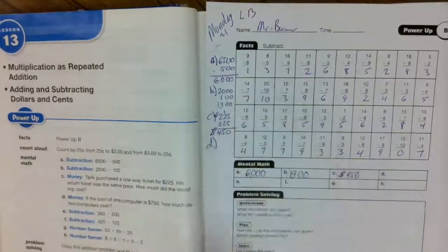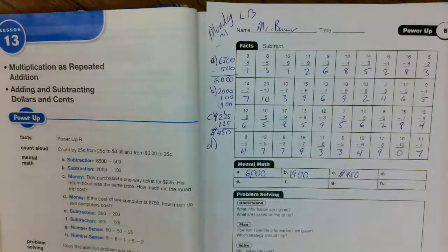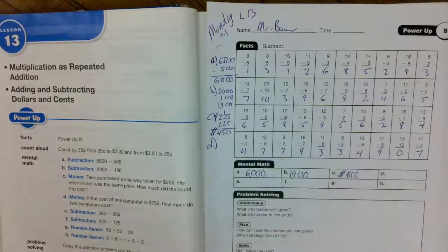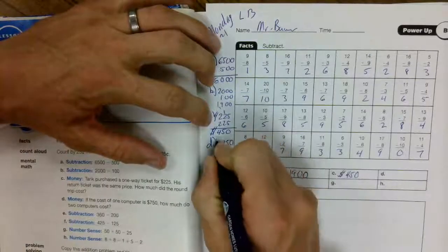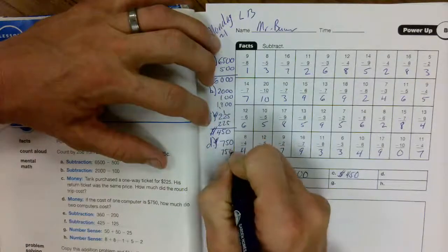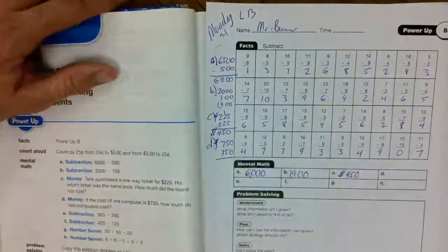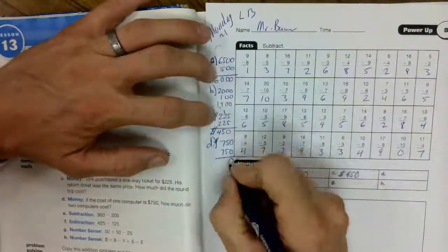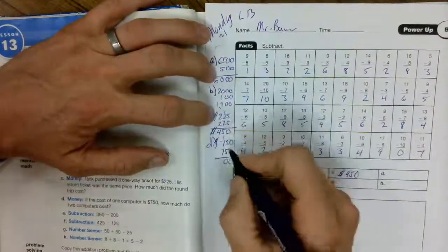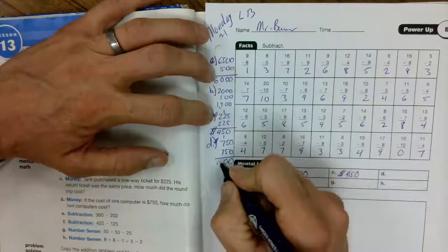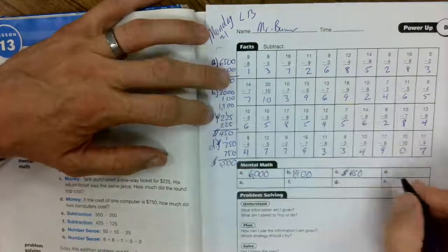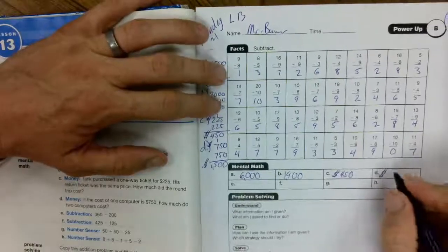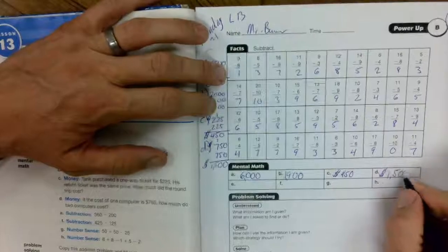D. Money. If the cost of one computer is $750, how much do two computers cost? $750 plus $750. 0 plus 0 is 0. 5 plus 5 is 10. 0 down, 1 up. 7 plus 7 is 14 plus 1 is 15. Do I need a label? Yes. Dollar sign. $1,500.